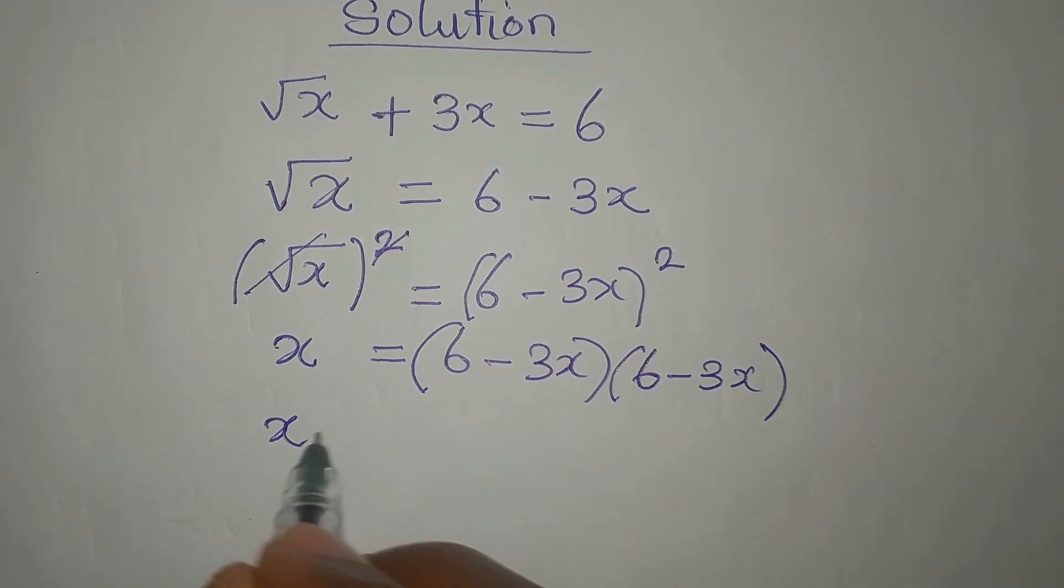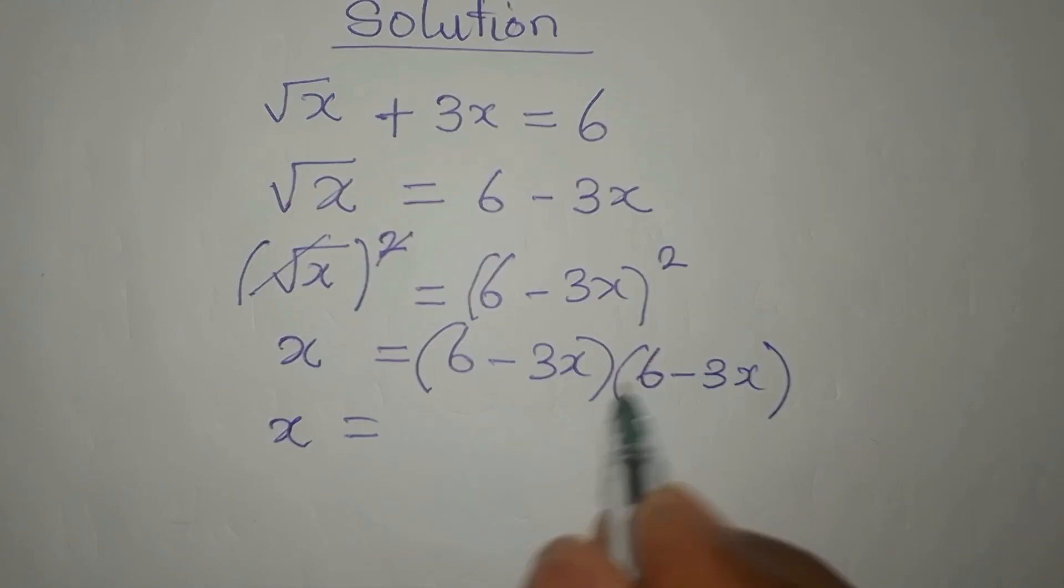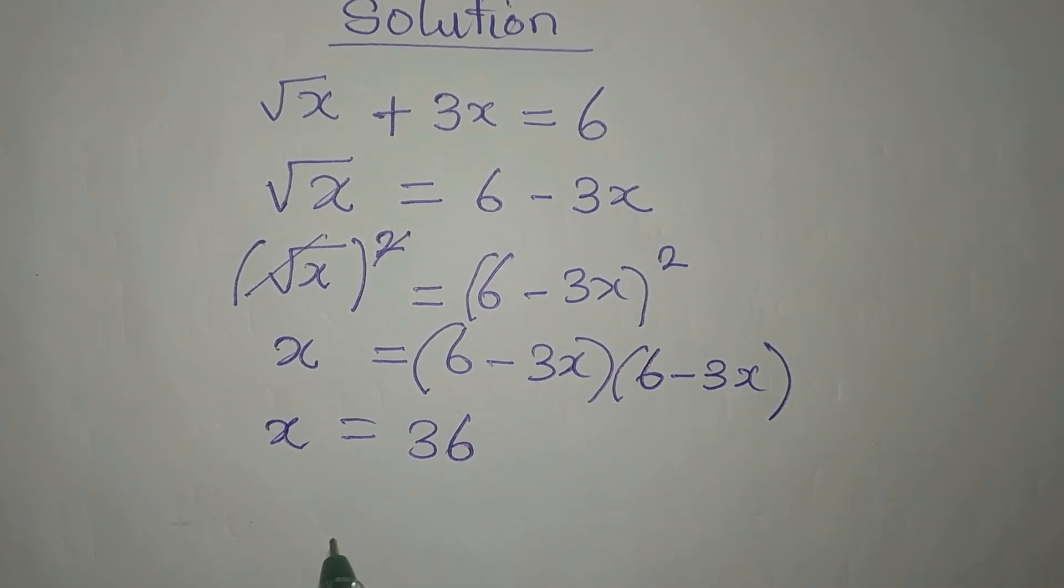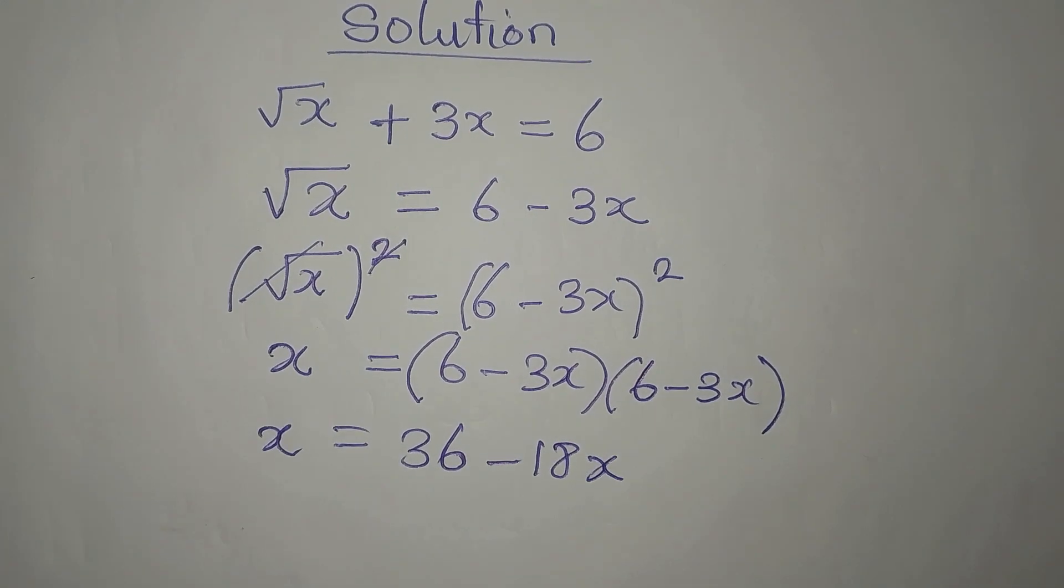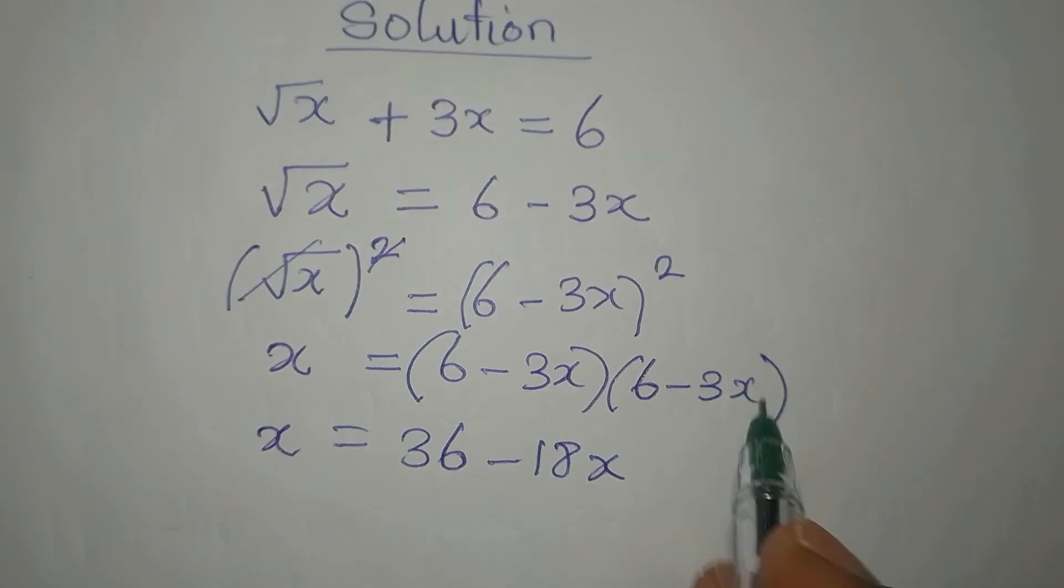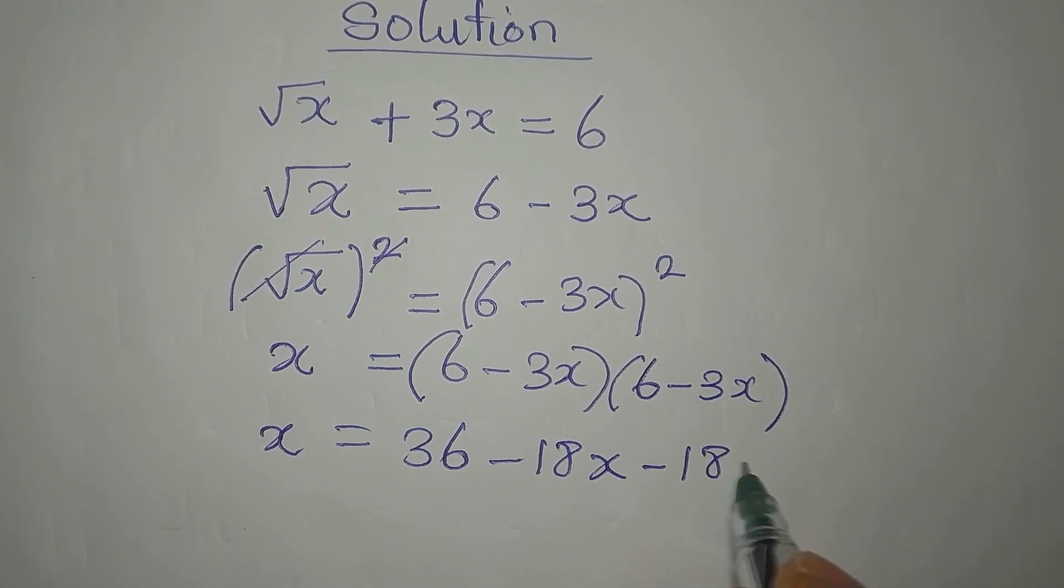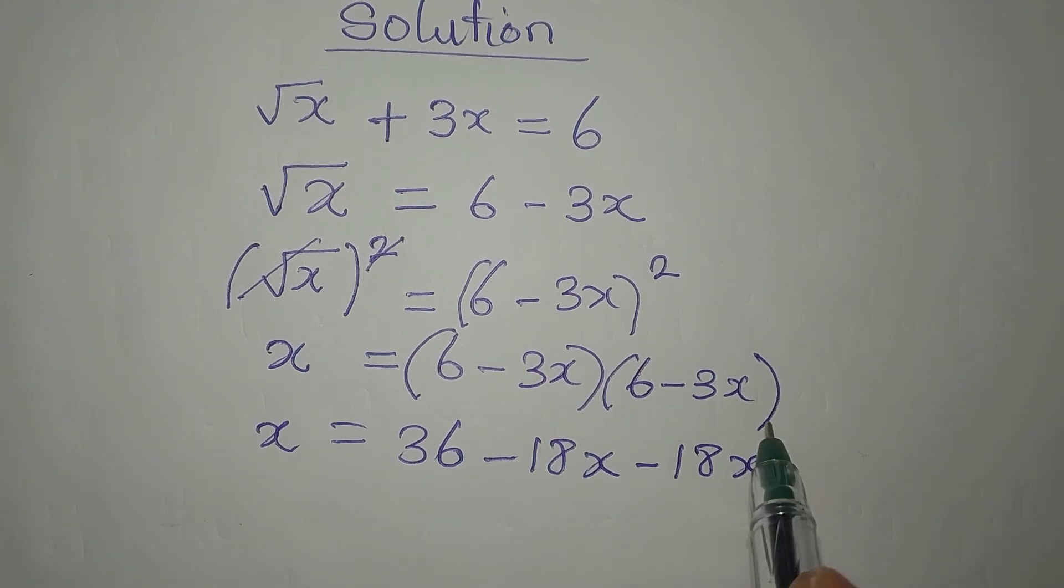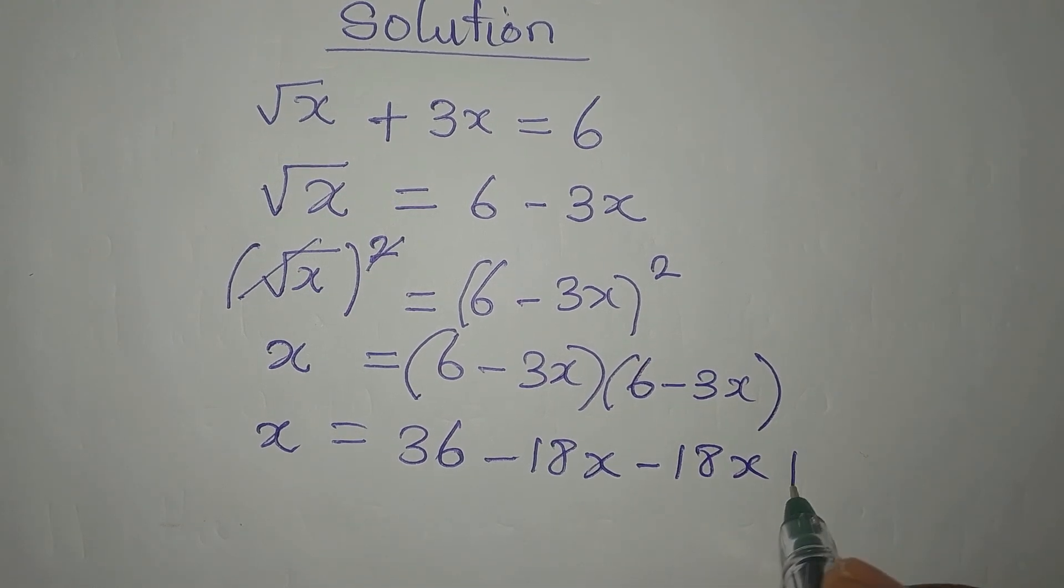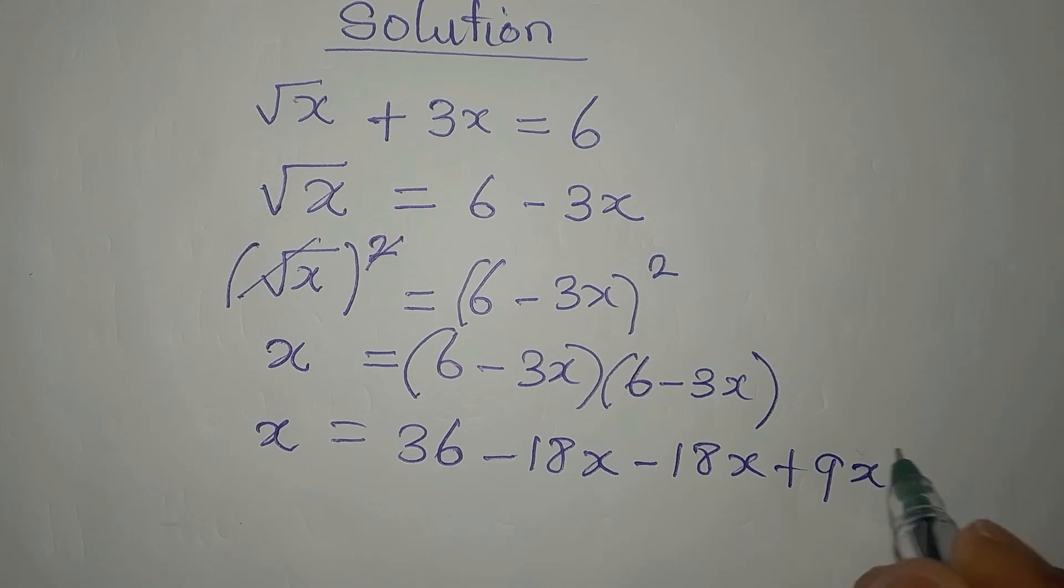Now, x here will be equal to 6 times 6 is 36. 6 times minus 3x is minus 18x. Minus 3x times 6 is minus 18x. Then minus 3x times minus 3x will give us plus 9x squared.